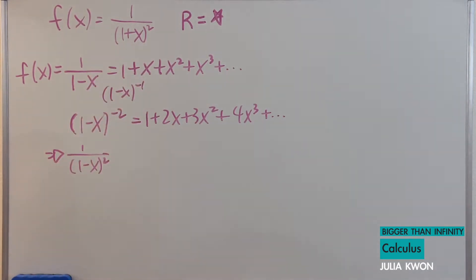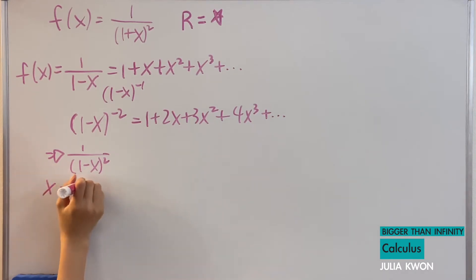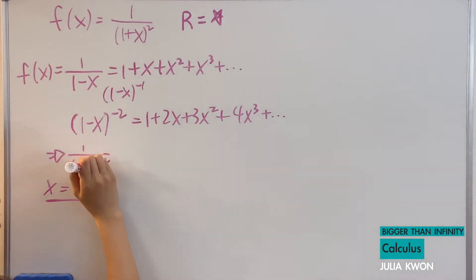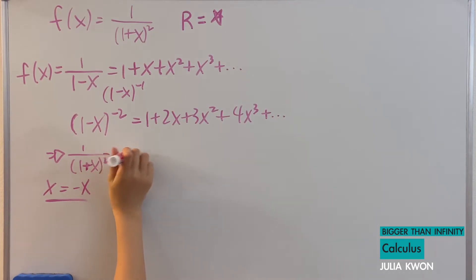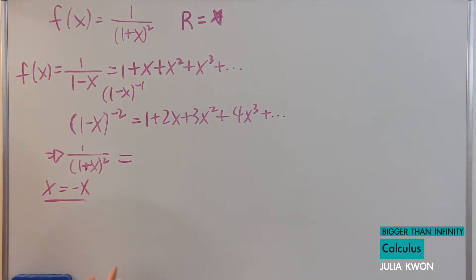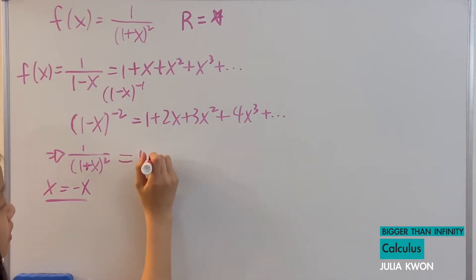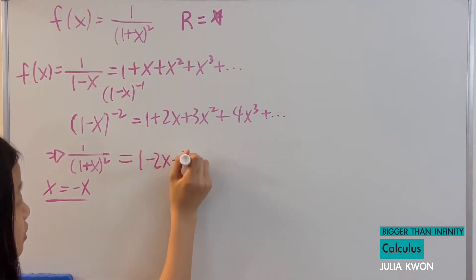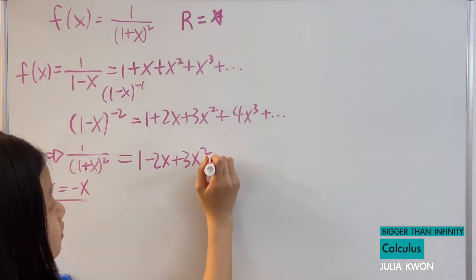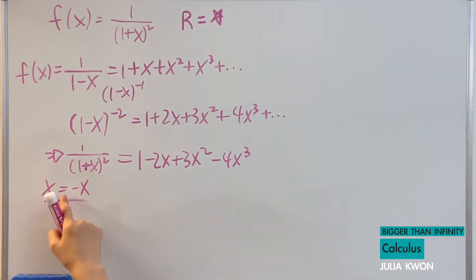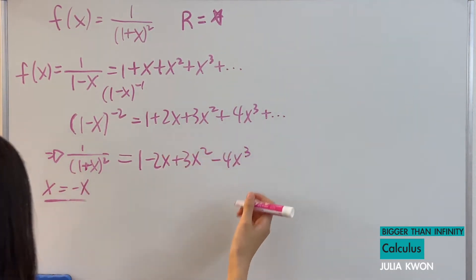So what we're going to do is replace all x values with negative x. So we would have a positive here: 1 plus x squared. If we replace x with negative x throughout, then we would have on the right side: 1 minus 2x plus 3x squared, since the negative gets squared so it's positive.